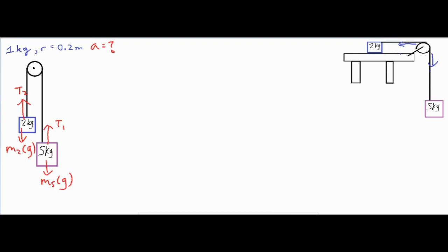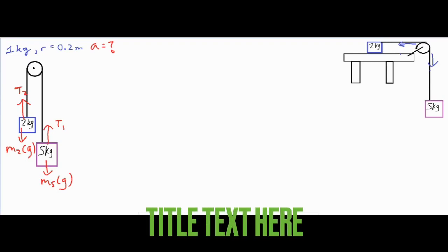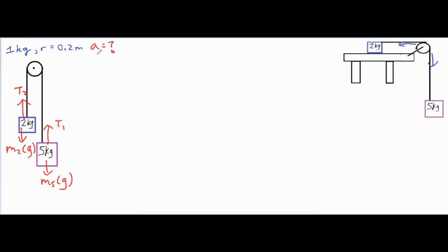In this video we're going to be taking a look at two pulley problems where the pulley has a significant mass and some rotational inertia, and then we're going to solve for the linear acceleration of the system. I have a vertical pulley system where we have a five kilogram mass being pulled up by the rope, which we call T1, and we have a force of gravity down, which is the mass of the five kilogram block times g. The two kilogram block is attempting to tug this string downward, providing some torque which we'll call torque two.